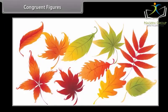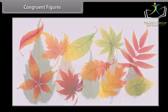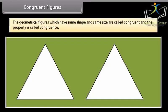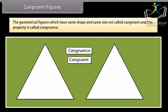Congruent figures. You might have observed that leaves of different trees have different shapes, but leaves of the same tree have almost the same shape, although they may differ in size. The geometrical figures which have the same shape and same size are called congruent, and the property is called congruence.